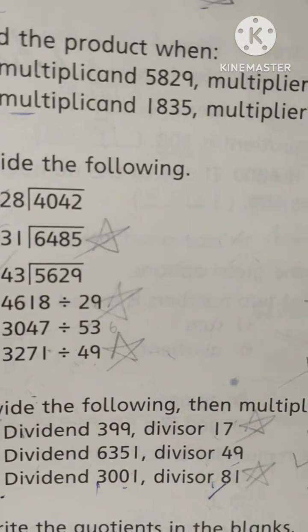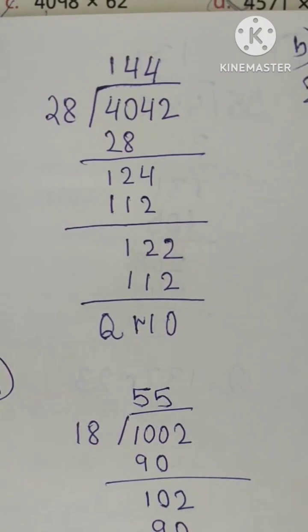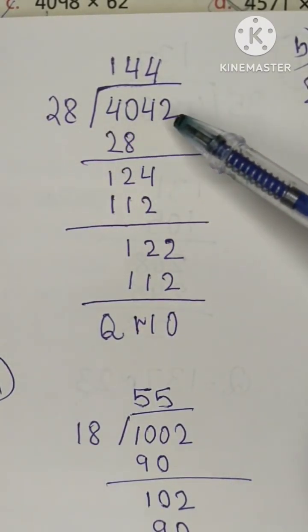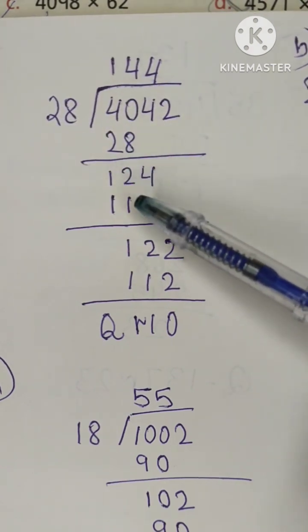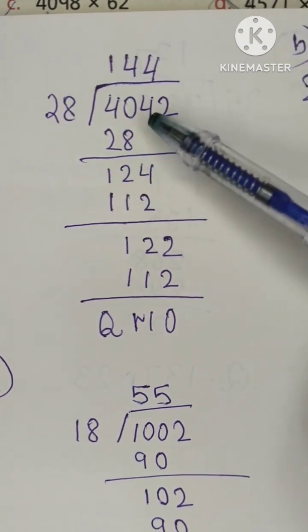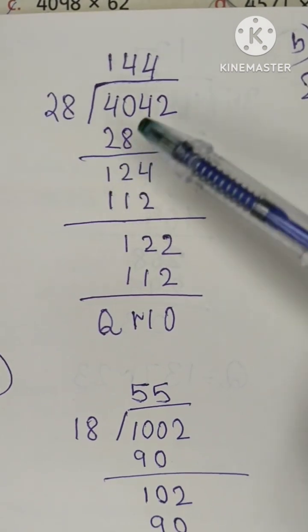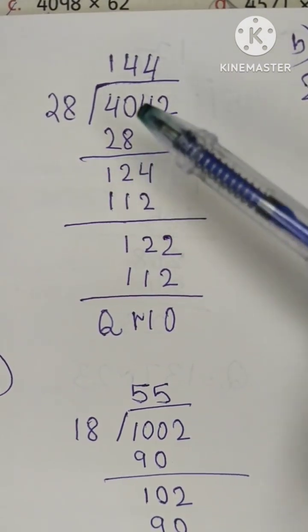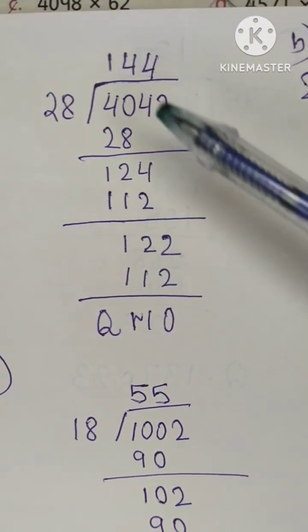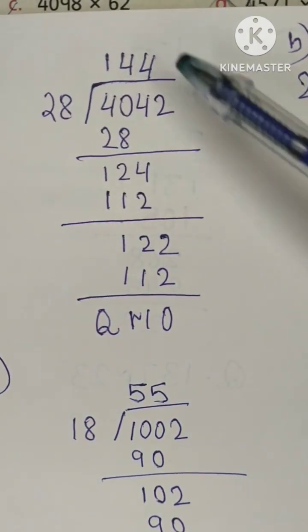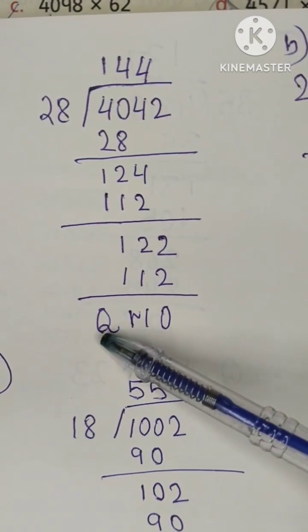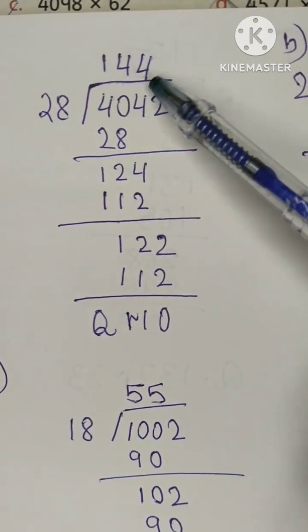Our next question is question number 7, divide the following. Let's do this. This is your first question: 28 divisor, 4042 dividend. I have divided, 1 then 28 minus... 1 and 2. After 40 minus 4, drop because 12 has a small value. Drop, then 28 into 4 is 1. Then 2 minus, last 2, then 28 into 4 is 1, 112, and your remainder will be 10 or quotient which is 144.